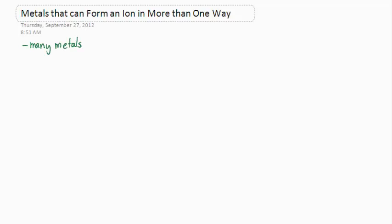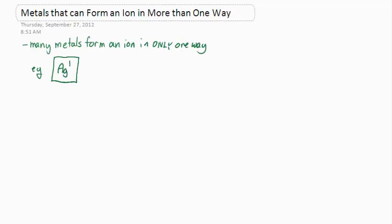Metals that can form an ion in more than one way. First of all, many metals can form an ion in only one way.